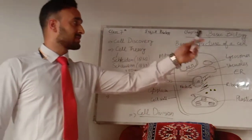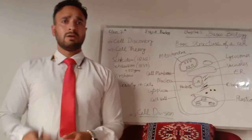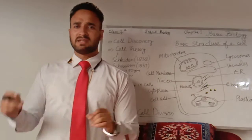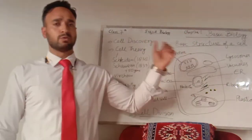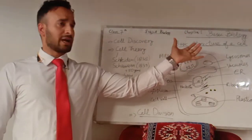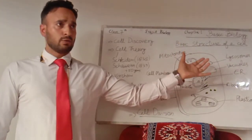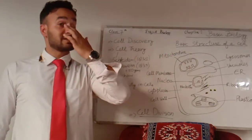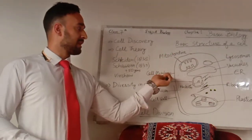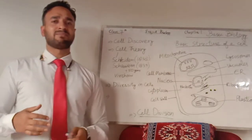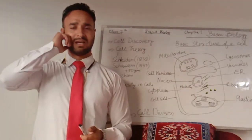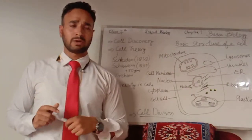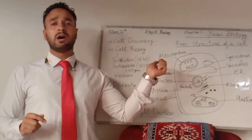Now let's talk about the basic structure of a cell. We usually study the cell in two separate categories: plant cell and animal cell. There are some differences I will tell you as we go through the details. If we look at the structure of a cell, we find that it has an outer membrane called the cell membrane, which acts as a protective barrier between the cell and the external environment. We also call this the plasma membrane.